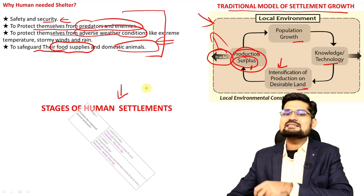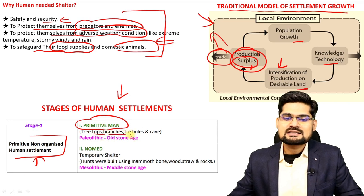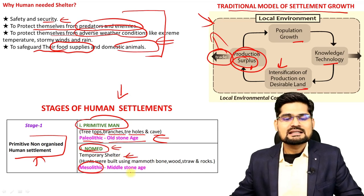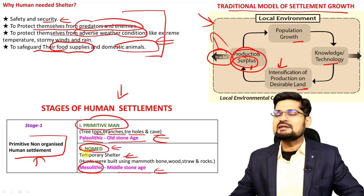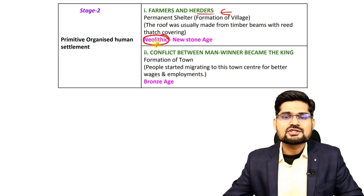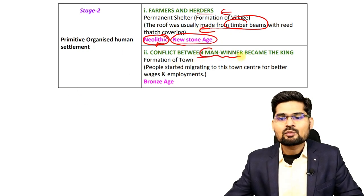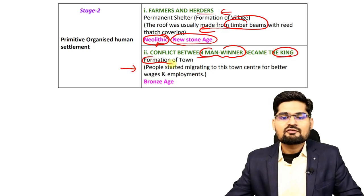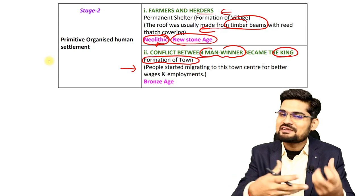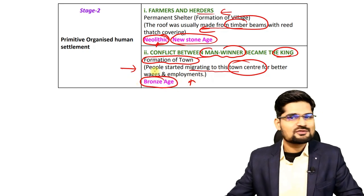The stages of human settlements begin with the first stage: primitive, non-organized human settlements — tree-top branches, tree holes, and caves — during the Paleolithic old stone age. Then comes the nomadic culture with temporary shelters in the Mesolithic middle stone age. In the second stage, during the Neolithic new stone age, farmers and herders develop, with roofs made of timber beams and reeds. Conflict leads to winners becoming kings, and towns and cities begin to form in the Bronze Age, around 3000–4000 BCE.